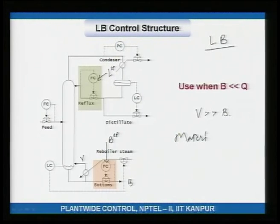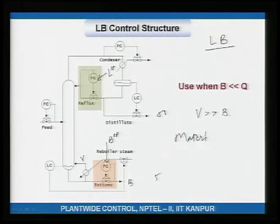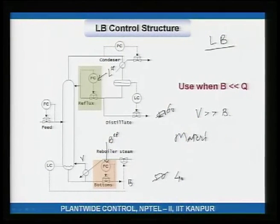The LB structure is again a material balance structure. When the operator increases or decreases the bottoms set point, they are directly adjusting the material balance across the column. For example, if the total feed is 100 and you change the bottoms from 50 to 40, then 60 must go up the top.